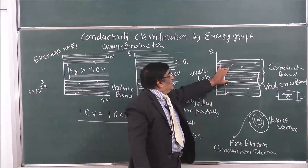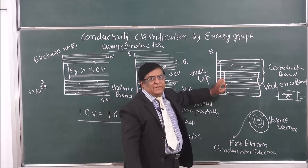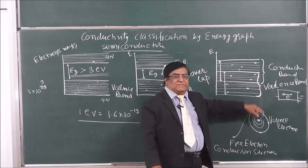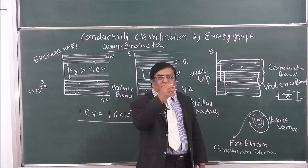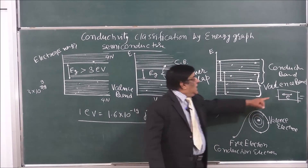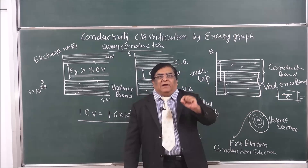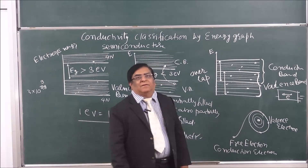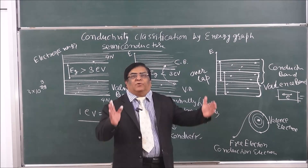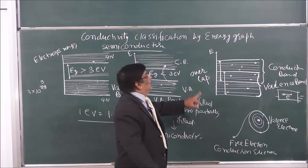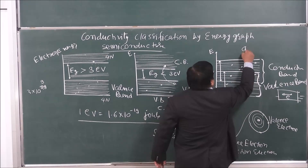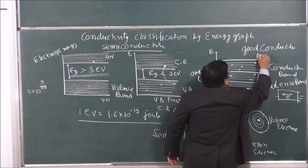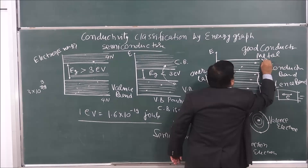The electrons in the overlap region originally do the work of valency, but whenever there is a need for current flow, they start moving in the electric field and form a current. That is why a metal is never short of electrons whenever we want to flow current through it, and that is why it is a good conductor. Such materials are metals.